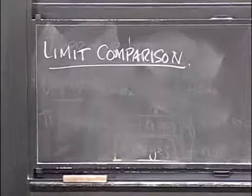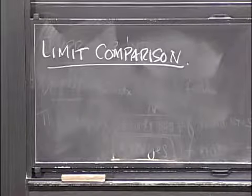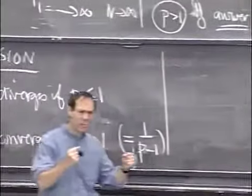Limit comparison is what you're going to use when, instead of being able to actually calculate the number, you don't yet know what the number is.